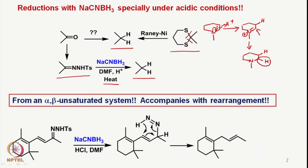We also looked at reactions of alpha-beta unsaturated tosyl hydrazones such as this, which undergo rearrangement and form this particular molecule. As shown in the mechanism, the reduction allows shifting of the double bond due to this six-membered proton transfer or hydrogen transfer. Such reductions accompany rearrangement, so this is something very interesting. We looked at various useful aspects of sodium cyanoborohydride.